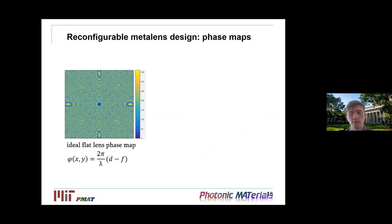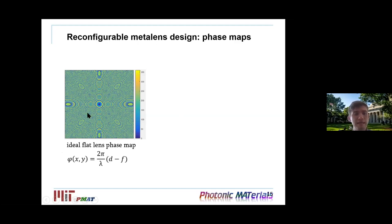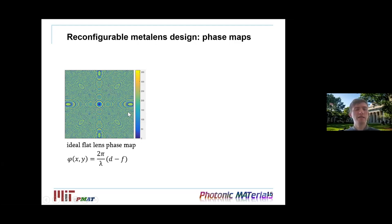Starting from the basics of metalens design, analytically the phase map — the phase as a function of x and y coordinates — describes the lensing functionality. It is expressed as φ(x,y) = (2π/λ)(d − f), where d is the distance from a point on the plane to the focal spot location (d = √(x² + y²) − f), and f is the focal length.